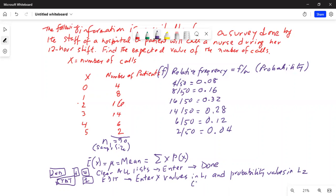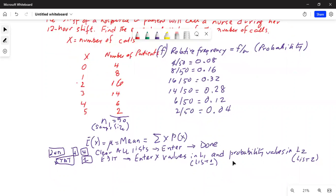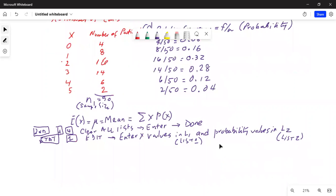L1 stands for list 1 and L2 stands for list 2. So that's what we'll do: second button then plus on top of enter, then number four clear all is done, then stat button then number one which is edit.